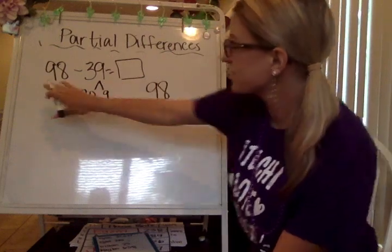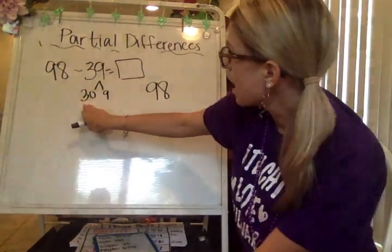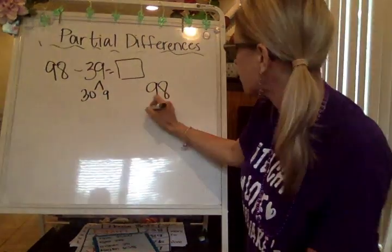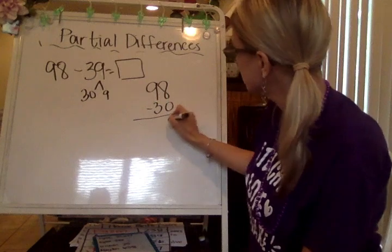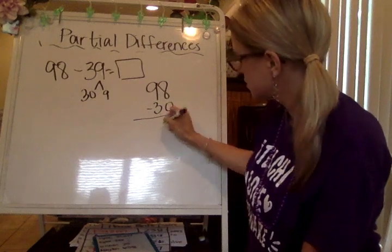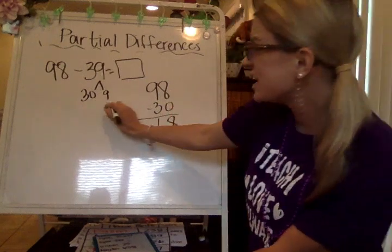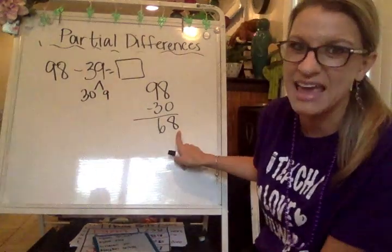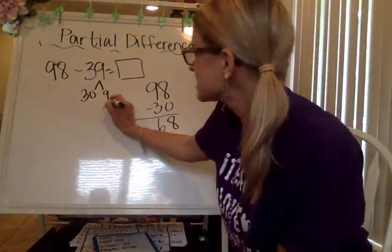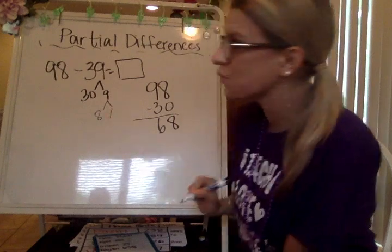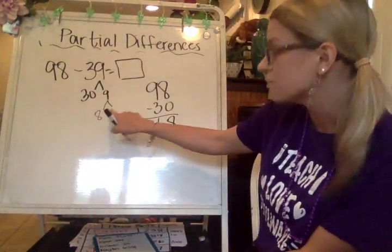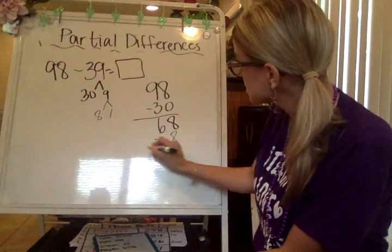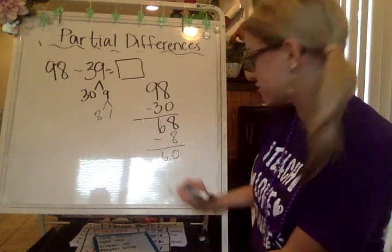I'm going to start with that beginning number 98 and subtract the tens first. There are three tens, which has a value of 30. So that gives me 68. The next number that I need to subtract is 9. I only have eight ones over here, so I'm going to break this 9 into an 8 and a 1, because 8 plus 1 equals that same number of 9. Breaking it into smaller chunks makes it easier.